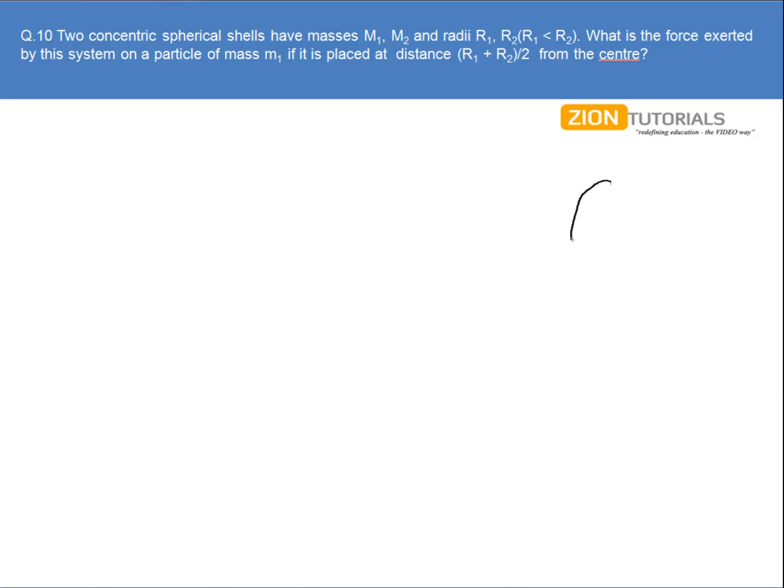Now let's say this is my one sphere, and another one. The inner sphere has a mass M₁ whose radius is R₁, and the outer one has a mass M₂ with radius R₂. A particle of mass m is placed at a distance (R₁ + R₂)/2 from the center.